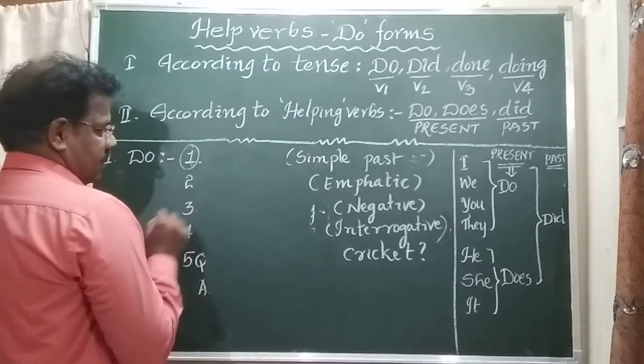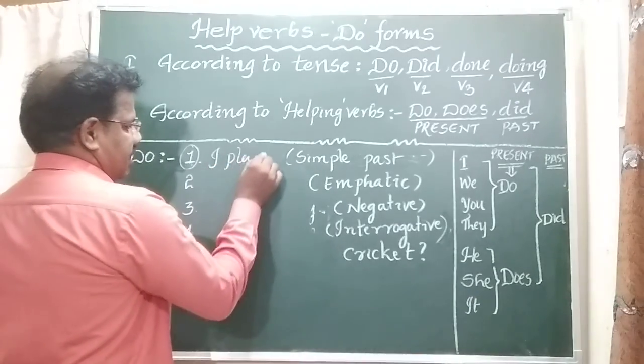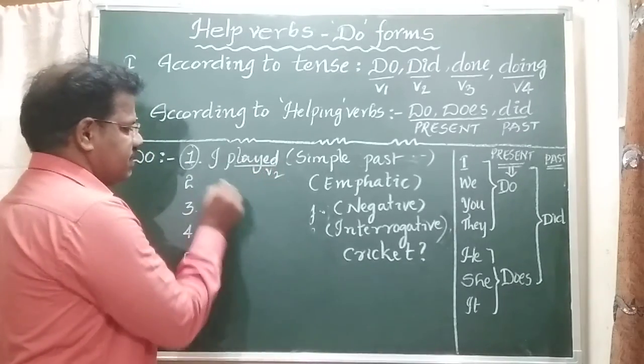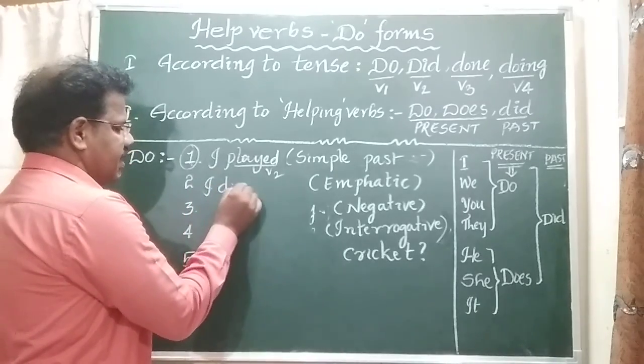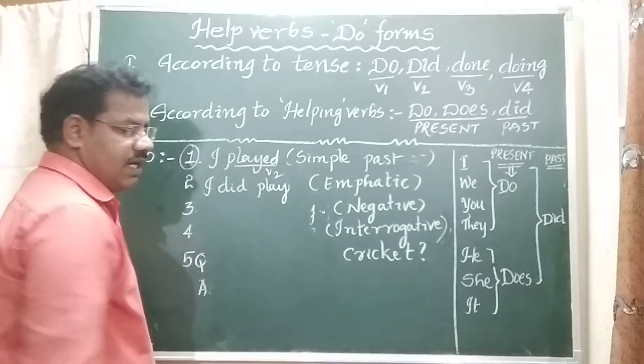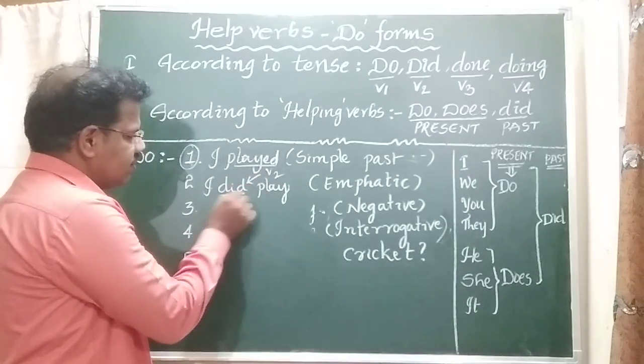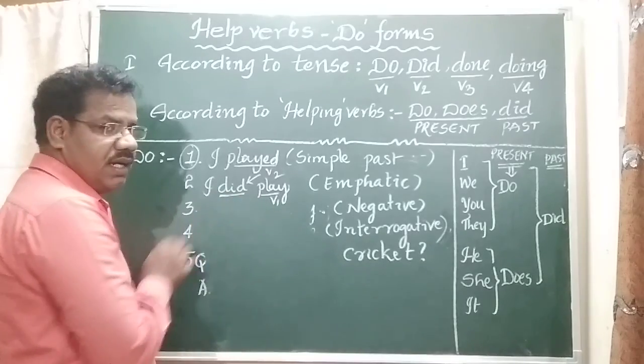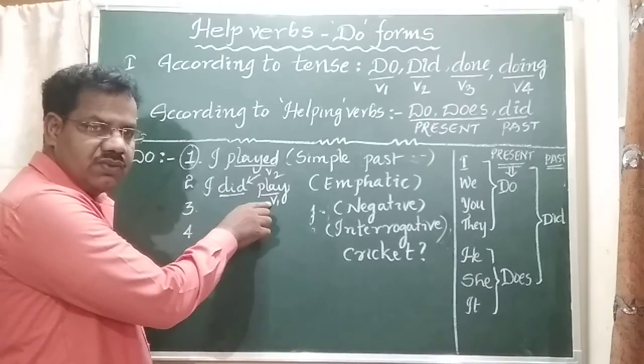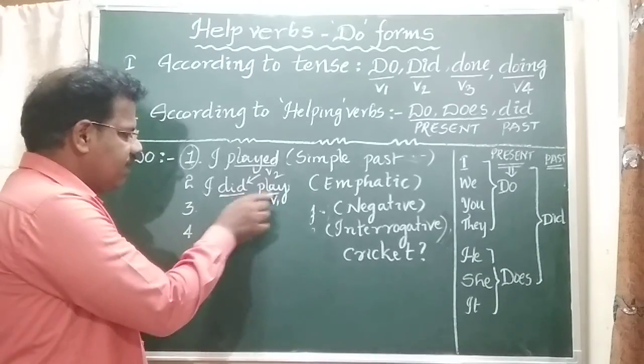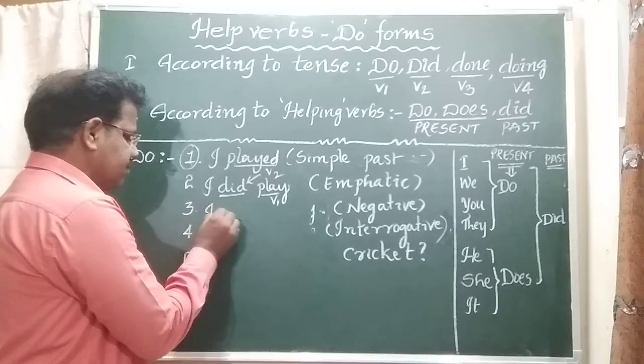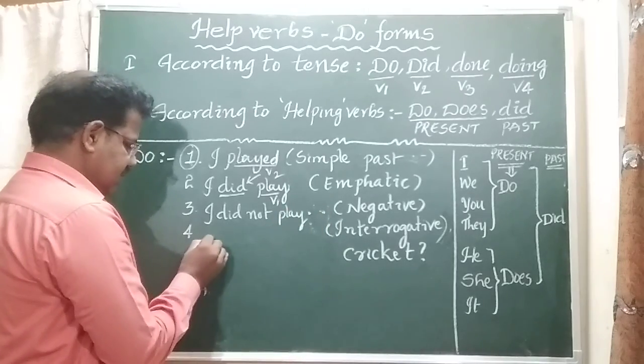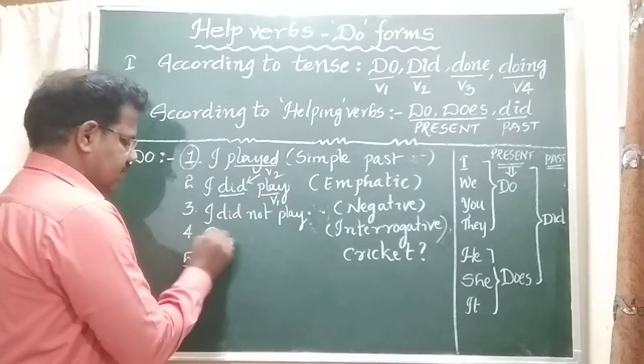Past tense: I played - simple past tense. Emphatic: I did play. With did, use V1 only. I did play. Negative: I did not play. Interrogative: Did I play?